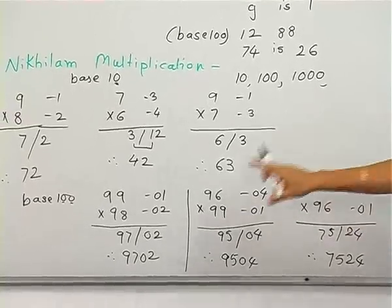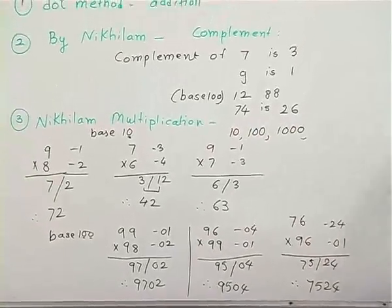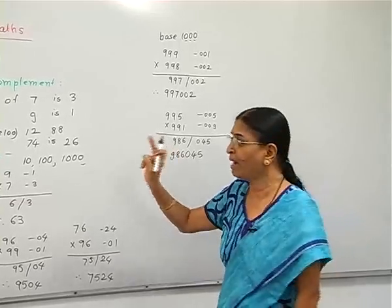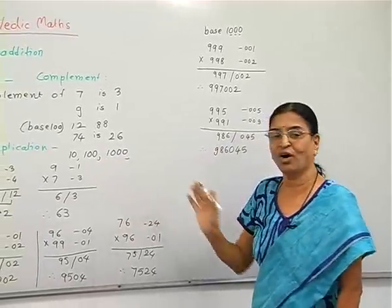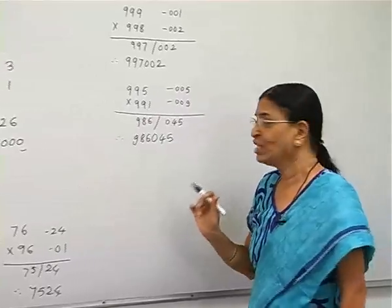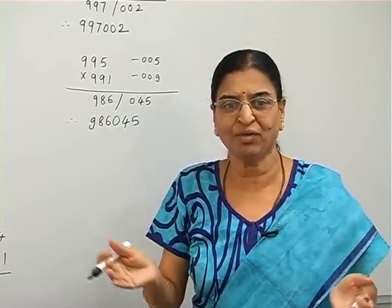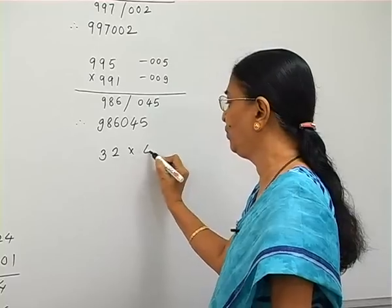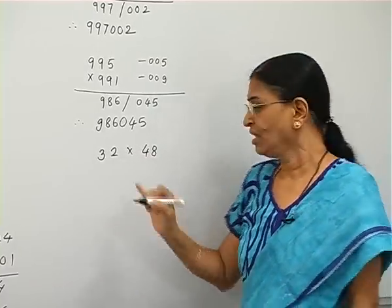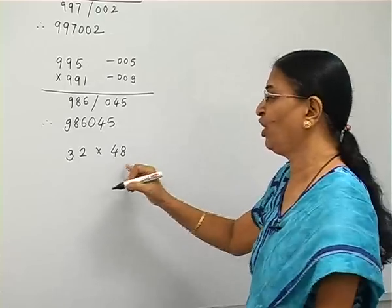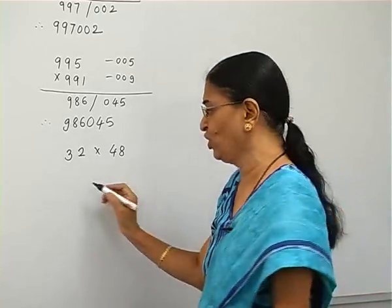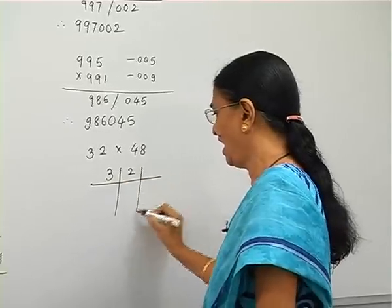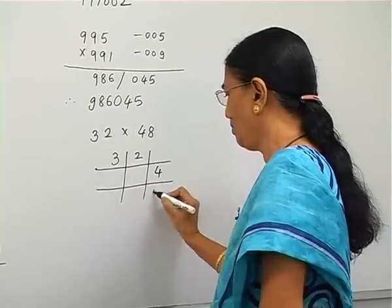You now know how to multiply using Nikhilam when the base is 100, 1000, or any greater number, as long as the numbers are less than the base. But suppose the numbers are not near the base — for example, 32 into 48, which is not near 10 or 100. We have learned a method to find out the product very easily.